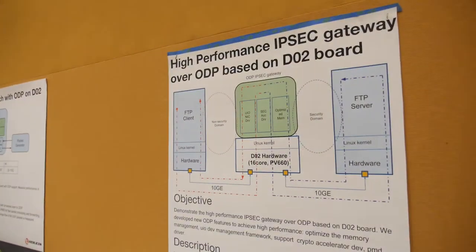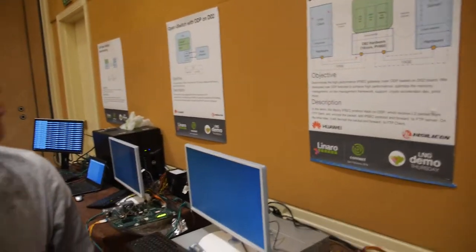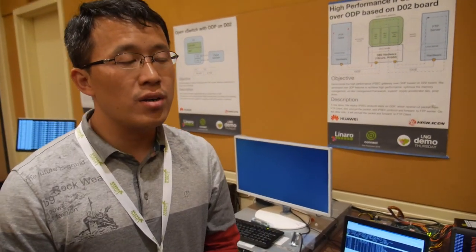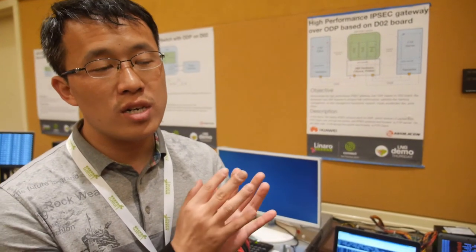Here's D02, and you're doing high performance IPsec gateway over ODP. We deployed the IPsec protocol over ODP — the IPsec gateway forwards the FTP client package to the IPsec server, so the FTP client can download files from the IPsec server. The IPsec gateway transfers the package from the non-security domain to the security domain.